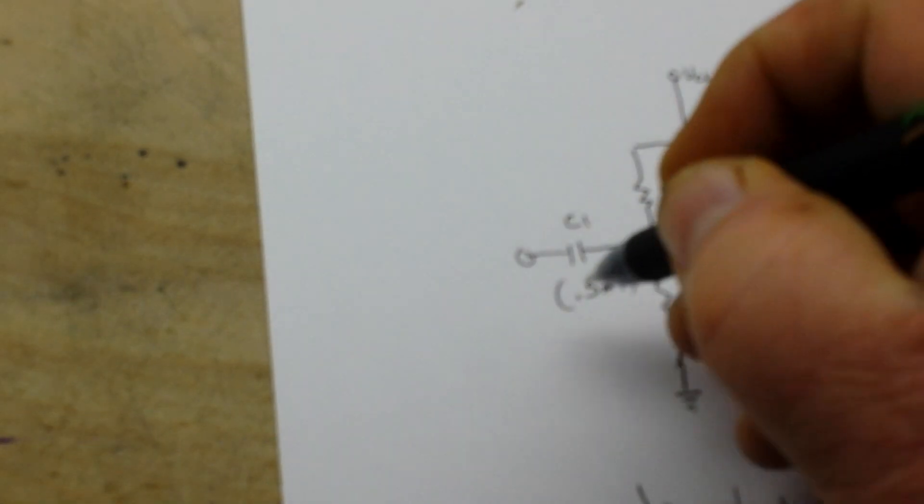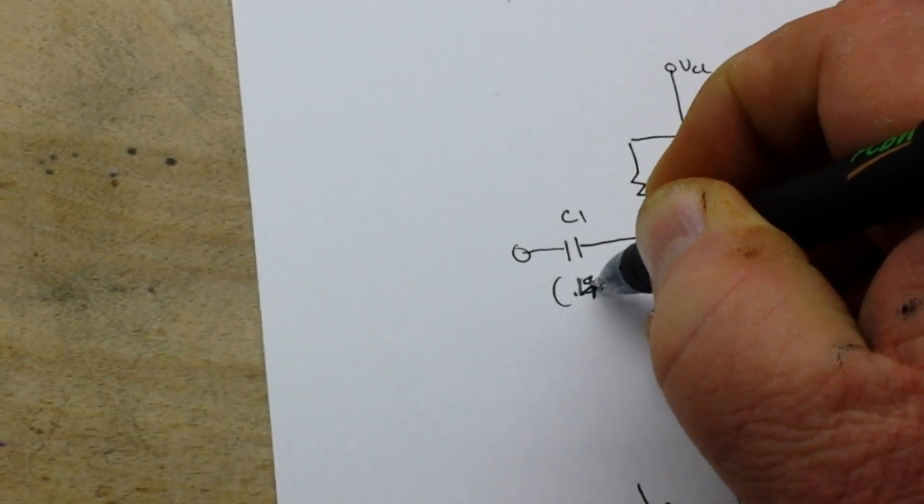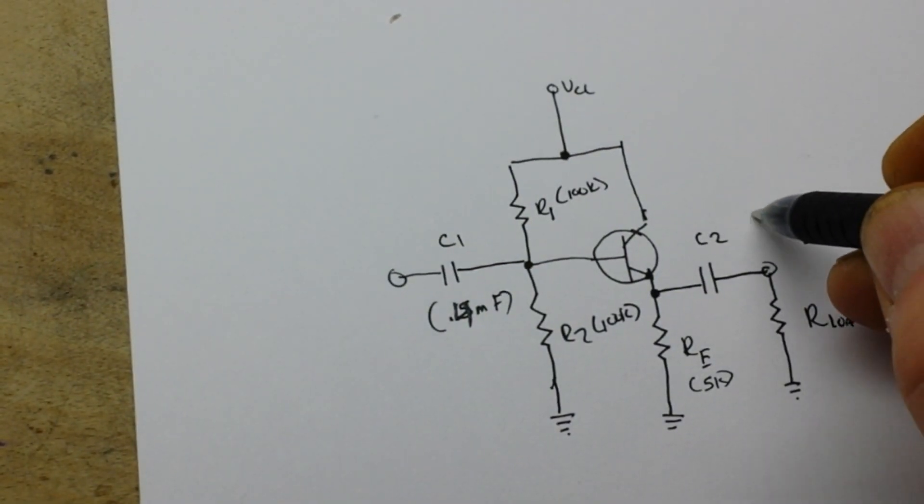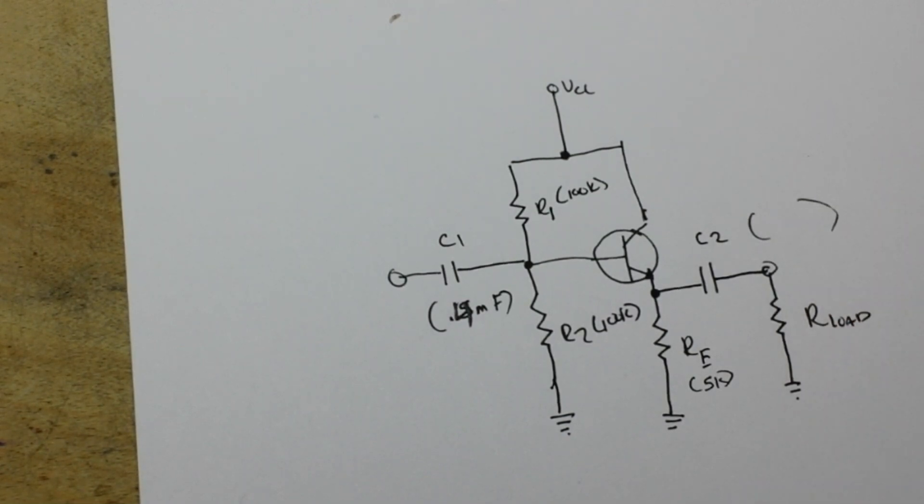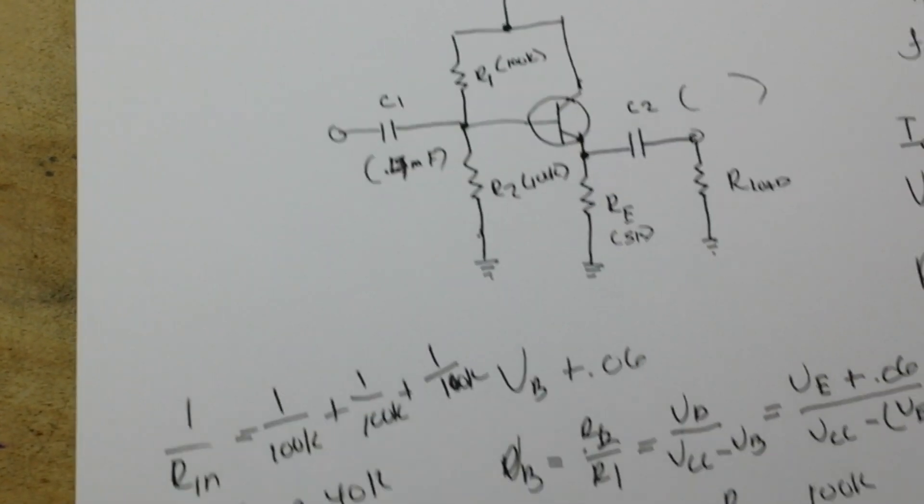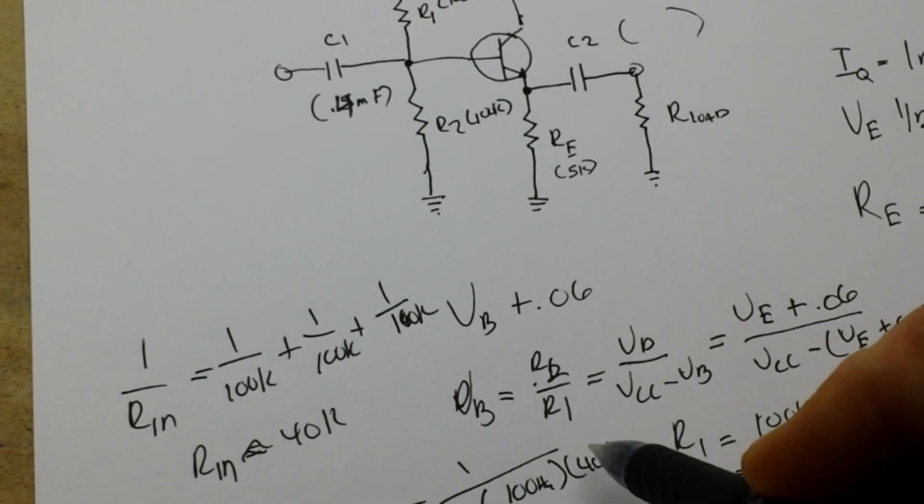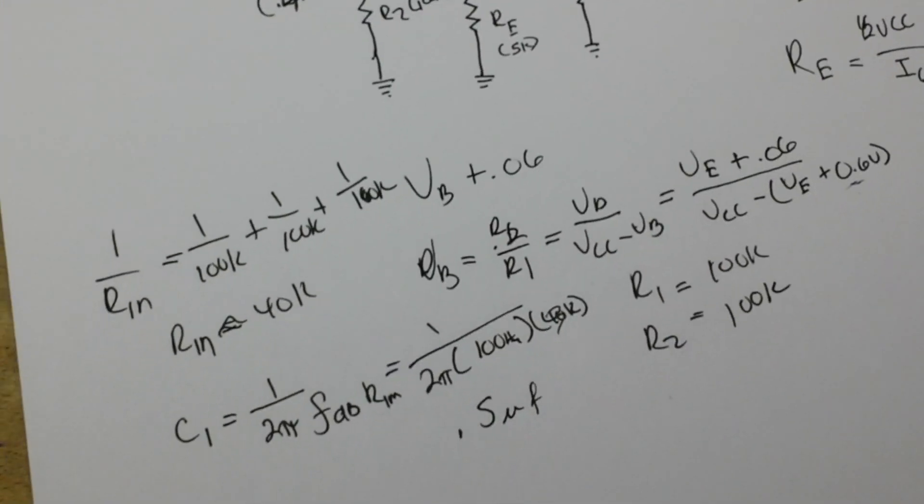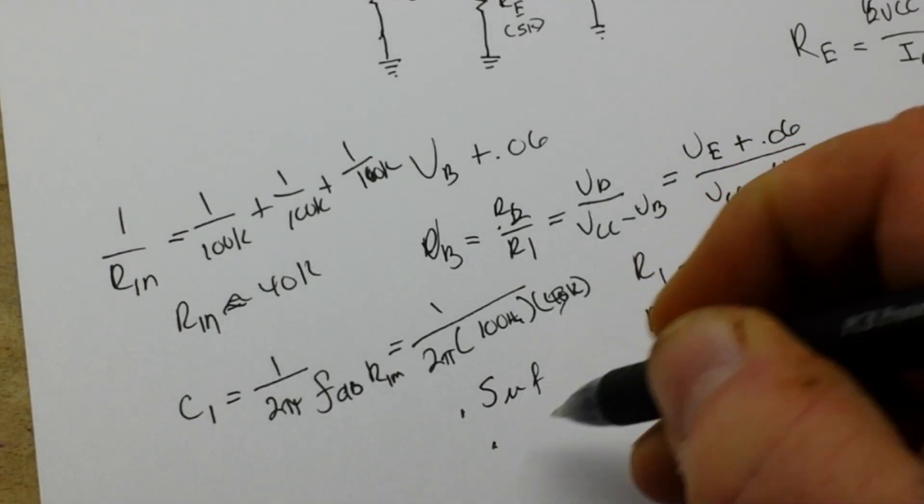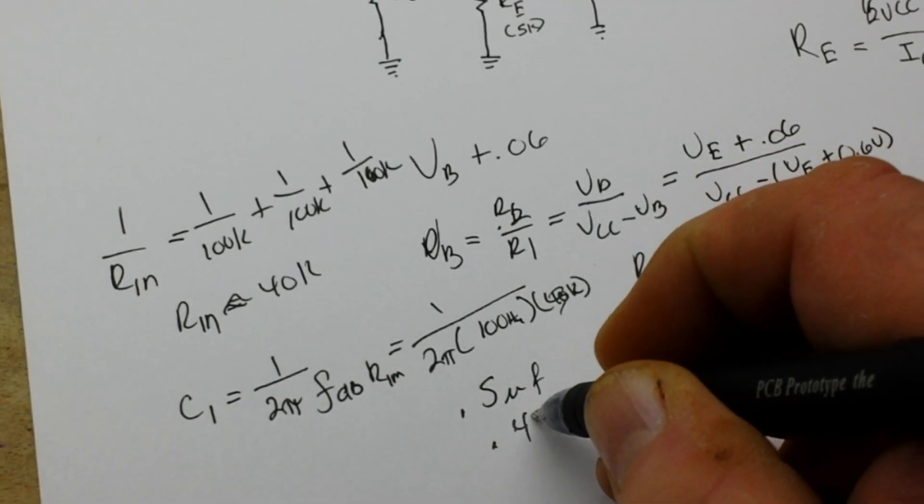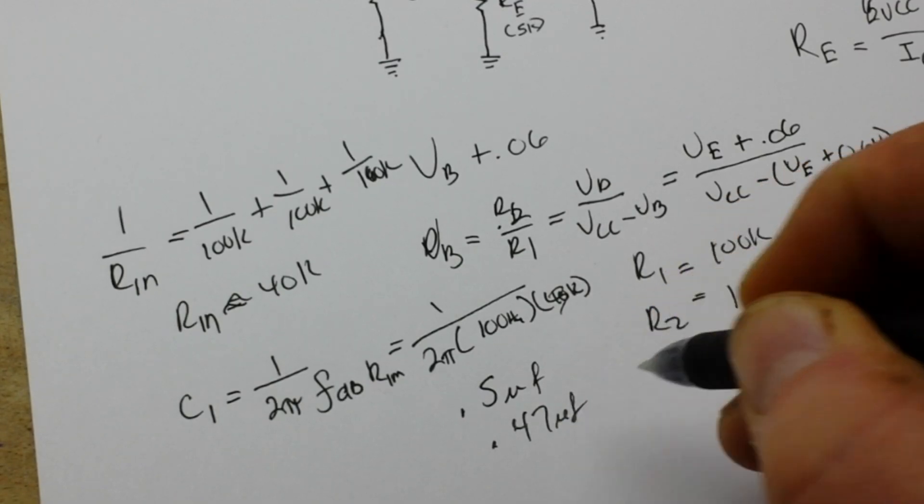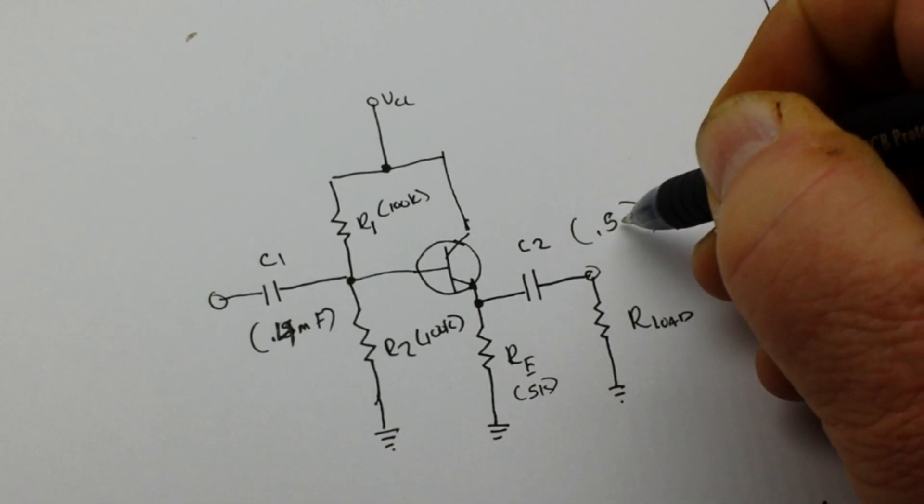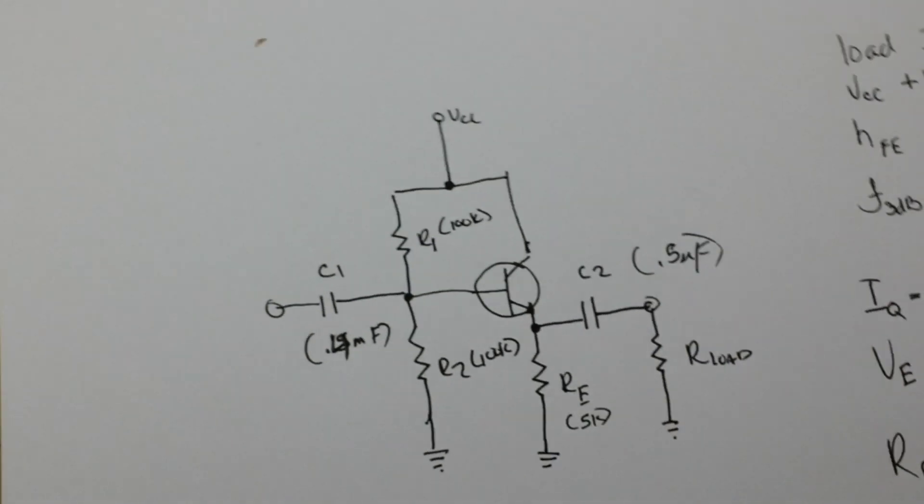My bad, bad math. 0.4 microfarad is our Rn. And then all we're left to find is our output. And to find our output, we use the same formula except this changes to 3k. And this is going to give us about 1.47 microfarad. We'll just call it 0.5 microfarad.